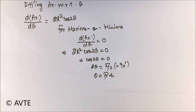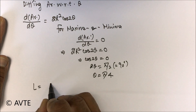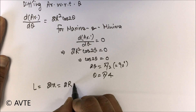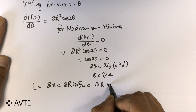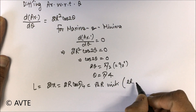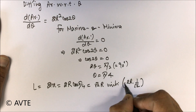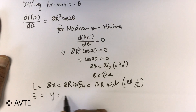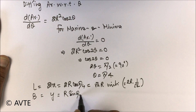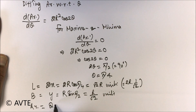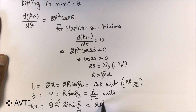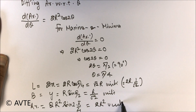When the problem says 'find the rectangle,' we must state its dimensions and the value of the area function. The length is 2x, which is 2R cos(π/4), giving root 2R units — since 2R times 1/√2 equals √2R. The breadth is y equals R sine(π/4), which is R over root 2 units. The area is R squared sine 90°, and since sine 90° equals 1, the area is R squared units.